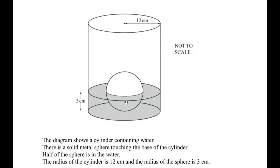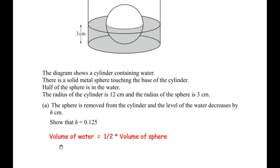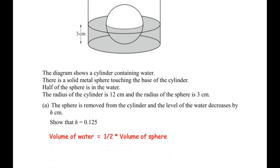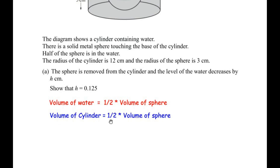As the sphere is immersed inside the water, the level of water increases, and as it is taken out, the height of the water falls. We can write that the volume of the water is equal to half the volume of the sphere, because only half of the sphere is inside the water. The volume of water is the volume of the cylinder, since the water has taken the shape of the cylinder. So we rewrite this as: volume of cylinder equals half times the volume of sphere.